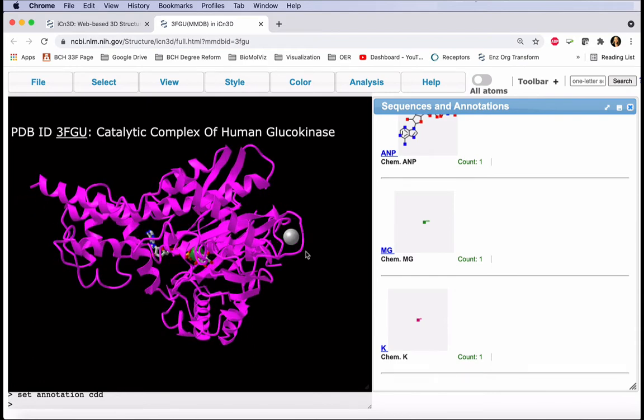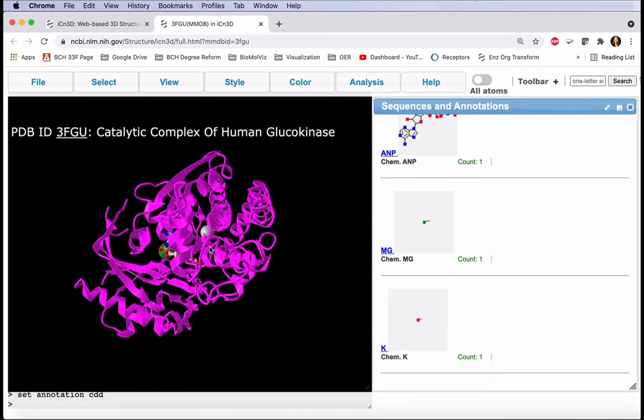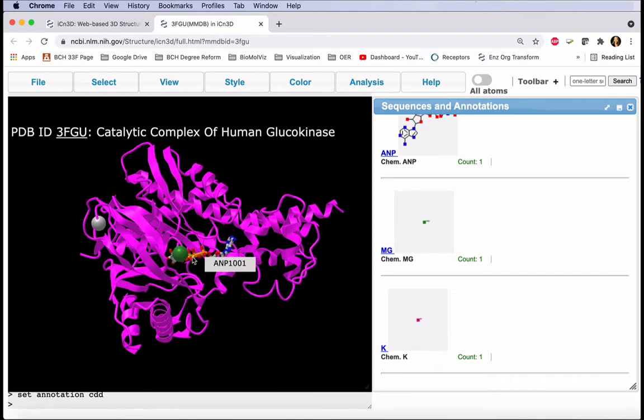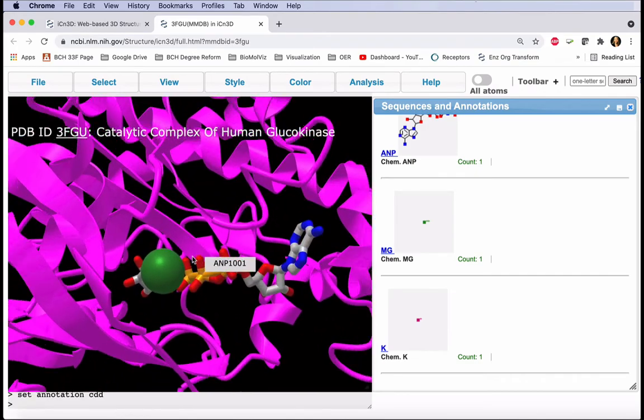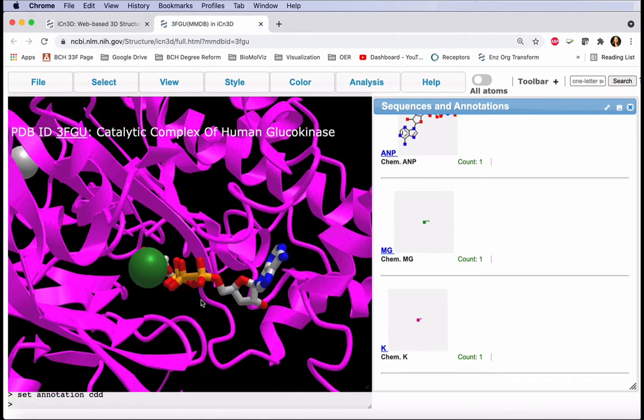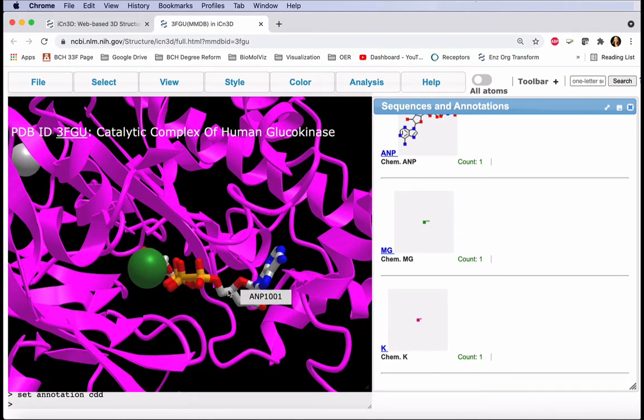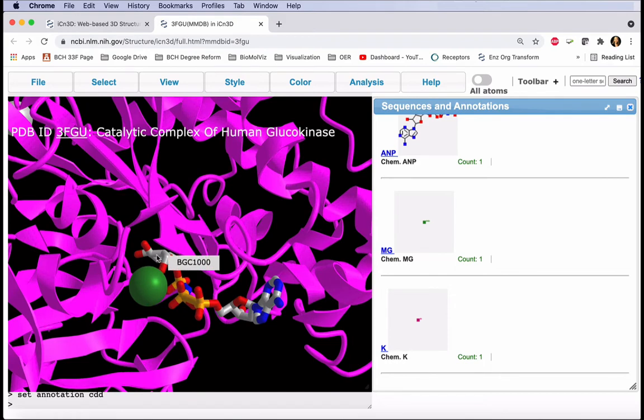Here is our ligand that is outside of the active site. If we hover over that, we see the K, identifying it as our potassium ion. The rest of the ligands are in our active site, and we can hover over each of these ligands to view its name.